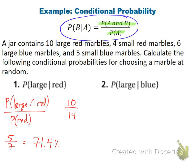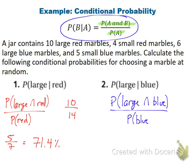Second marble problem: probability of being large and blue, divided by probability of being blue. There are 6 large blue marbles, and 11 blue marbles total, so 6 over 11, which gives 54.5%.